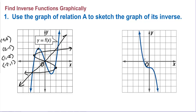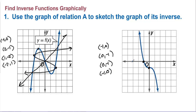For the second example, on the original we have the point (negative 1, 0), so the inverse has (0, negative 1). We also have (0, negative 1) on the original, so the inverse has (negative 1, 0). These two graphs are reflections over the line y equals x.